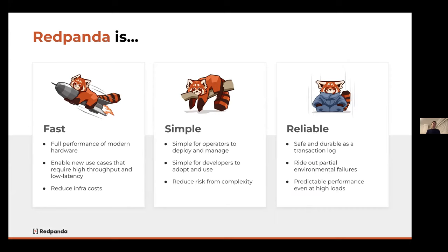Red Panda is a modern streaming platform for mission-critical workloads. It's fast, simple, and reliable — designed from the ground up in C++ to gain full performance of modern hardware, able to run across all cores on a multi-core architecture, use lots of memory, and benefit from faster IO subsystems like SSDs and NVMe drives. Red Panda is very good at scaling up as well as scaling out — it's a distributed system that scales across many machines, enabling new use cases that require high throughput and low latency.